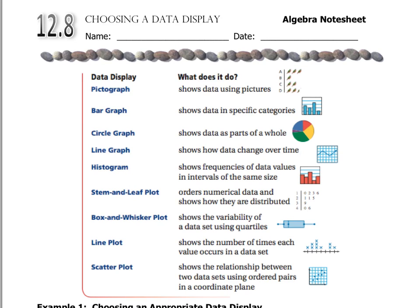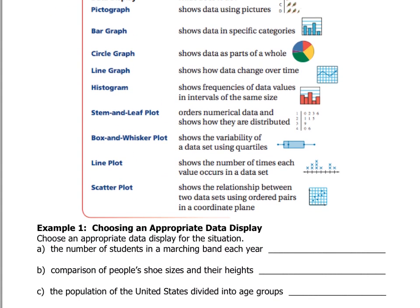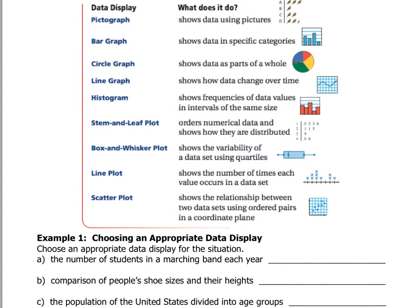This lesson is all about the different types of displays you can make for data. It goes all the way back to kindergarten where you learned about pictographs, and all the way to our most recent graph which is a scatter plot. I'd like you to pause right now and just read this chart, refresh your memory about the different types of plots and what they are called and what they look like.